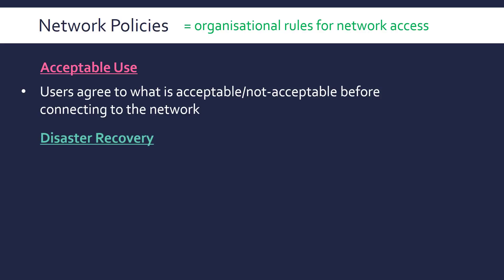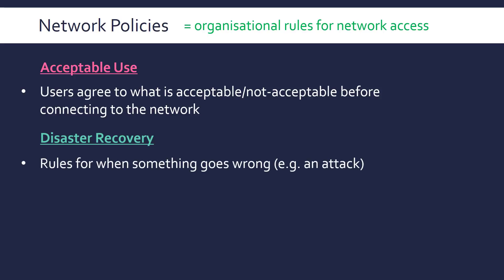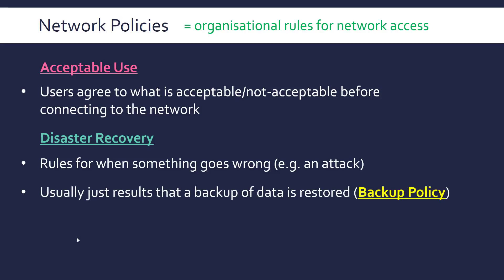The second policy is disaster recovery, which is enacted when something goes wrong. There's a set procedure for when something goes wrong, like an attack. For example, in the NHS cyber attack, the policy was to shut down the computers that weren't affected so they didn't get affected by it. Often this results in a backup being restored — that's a separate policy, literally saying you've got a backup of all the data. Disaster recovery is quite important because it gives clear steps to what to do if an attack happens.